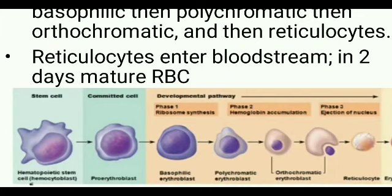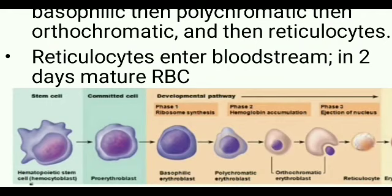In the basophilic erythroblast phase (phase 1), ribosome synthesis occurs. In the polychromatic erythroblast phase (phase 2), hemoglobin synthesis occurs. In orthochromatic erythroblast (phase 3), iron accumulates. In the later stage of orthochromatic erythroblast, the nucleus is ejected. We then get a reticulocyte, which enters the bloodstream and matures into a mature RBC or erythrocyte.